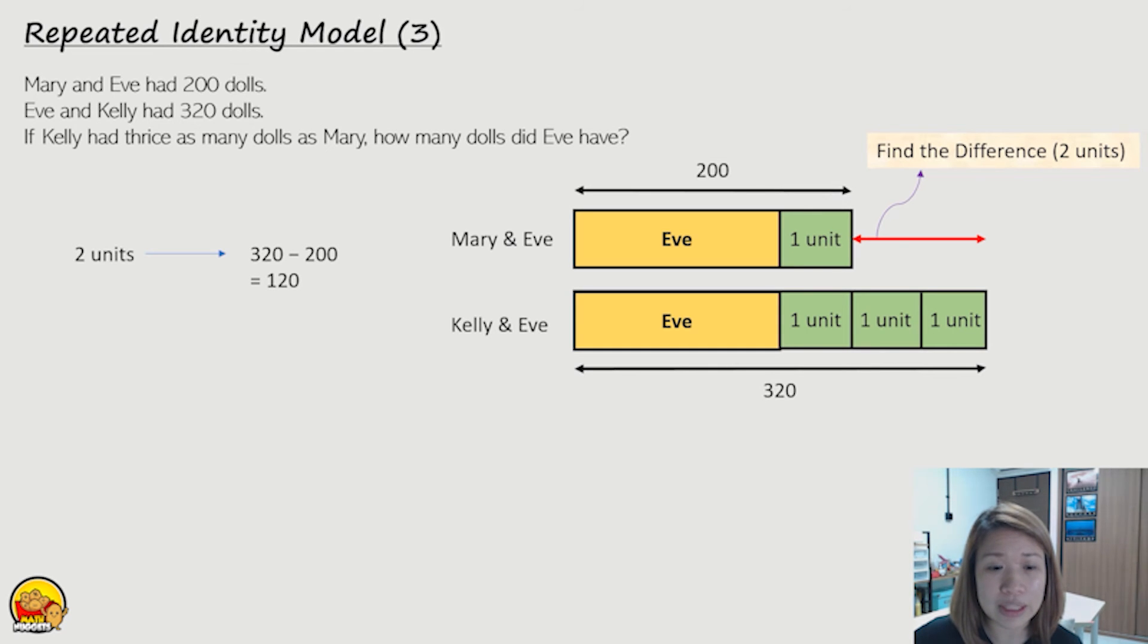To find the two units, we would take 320 minus 200. And we get 120. So 120 would be this part here, the two units, which is the difference.